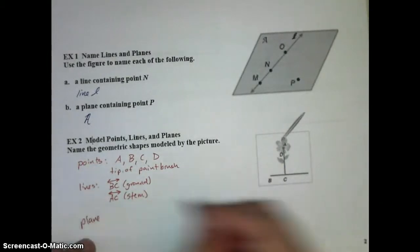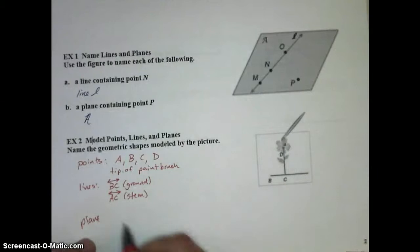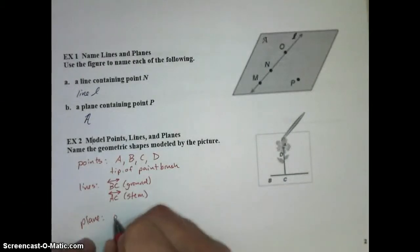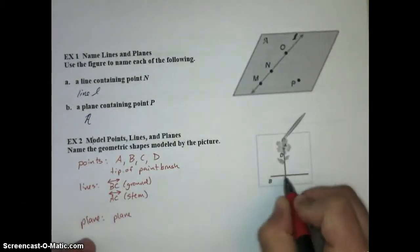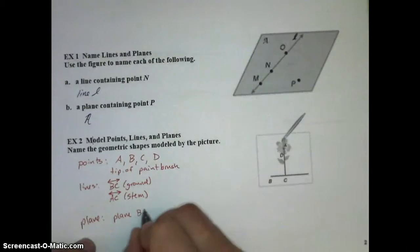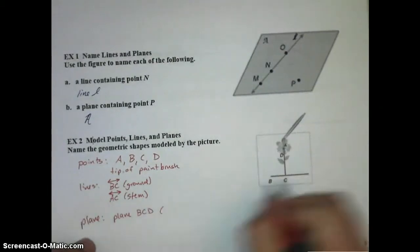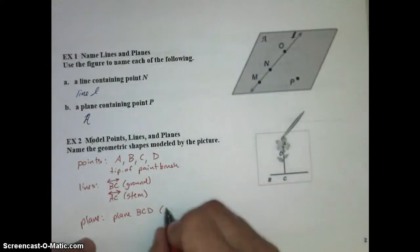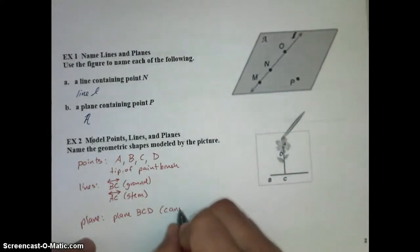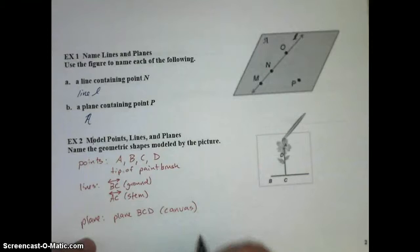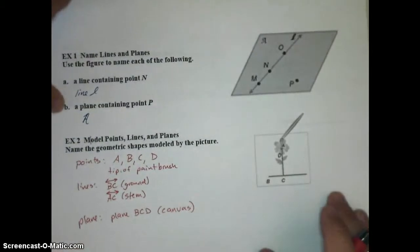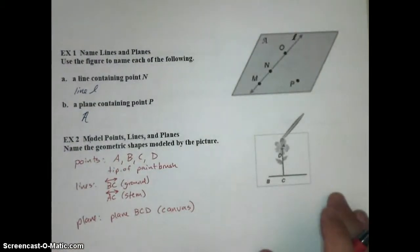Then the plane, notice they don't have a script letter. So, I'm going to have to use three non-collinear points to label the plane. I'm going to call that plane B, C, D. B, C, D is our plane, and that is a representation of the canvas that this portrait is being painted on. Sorry, not a portrait, it's still life.